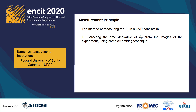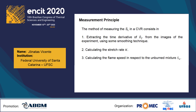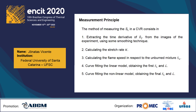First, extracting the time derivative of the flame radius from the images of the experiment using some smoothing technique. Then calculating the stretch rate and calculating the flame speed with respect to the unburned mixture. Next, curve fitting the linear model to obtain first estimates of laminar flame speed and Markstein length, followed by curve fitting the non-linear model to obtain the final estimates of laminar flame speed and Markstein length. Finally, evaluating the statistical uncertainties in laminar flame speed.